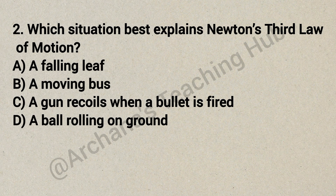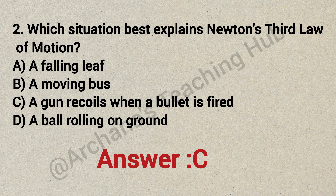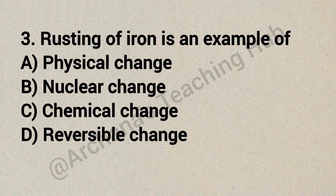Question 2: Which situation best explains Newton's third law of motion? Option A: a falling leaf, Option B: a moving bus, Option C: a gun recoil when a bullet is fired. Correct answer is Option C: a gun recoil when a bullet is fired.